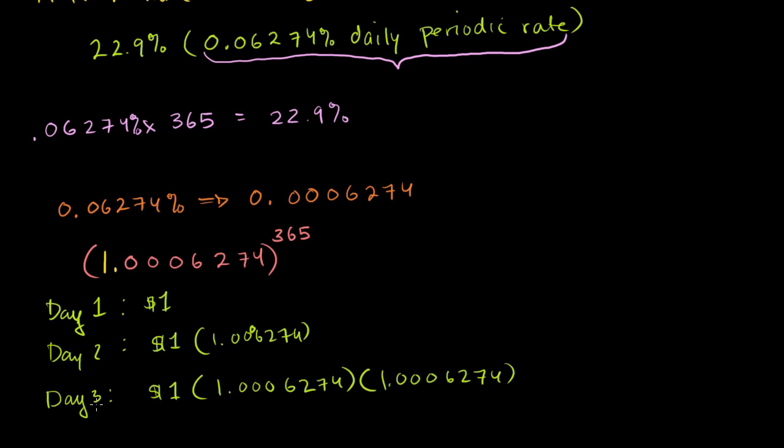As you can see, for two days I'm raising this to the second power by multiplying it by itself. So if I keep the balance for 365 days, I raise it to the 365th power.